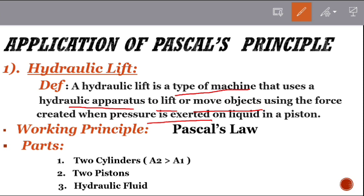The working principle is based on Pascal's law: if you have a fluid in a closed container, the pressure will equally distribute through the fluid in all directions. The hydraulic lift has three main parts, and if you have two cylinders, those two cylinders have a cross-section.